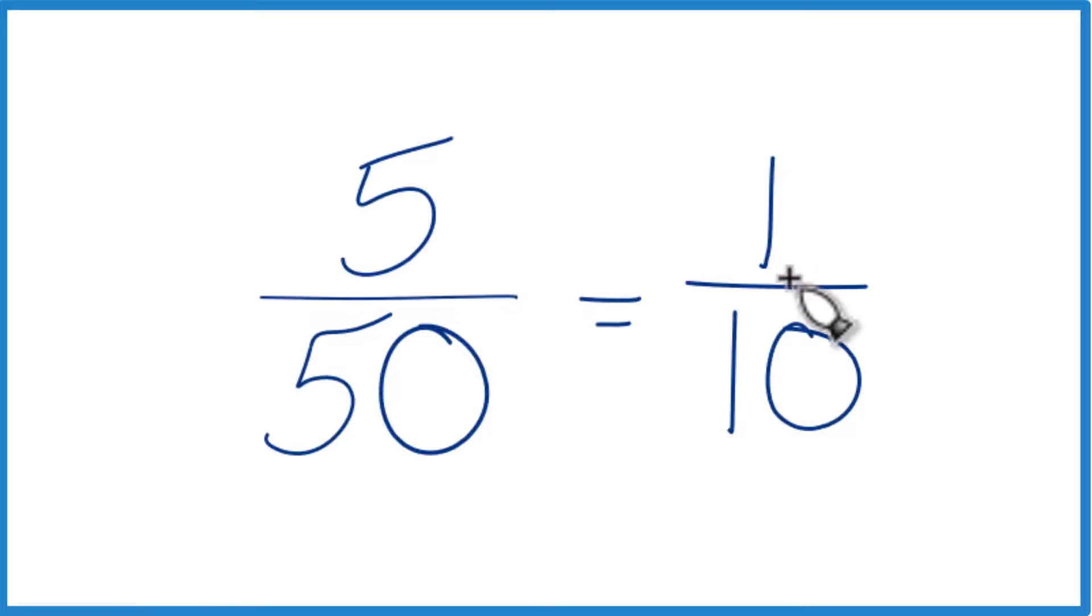So if you take and divide 1 by 10 on a calculator, you'll get 0.1. So 5 fiftieths or 1 tenth, they both equal 0.1.